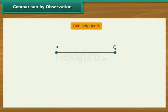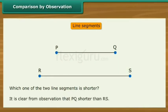Comparison by observation. Look at two line segments PQ and RS. Which one of the two line segments is shorter? Observe the two line segments. It is clear that PQ is shorter than RS.